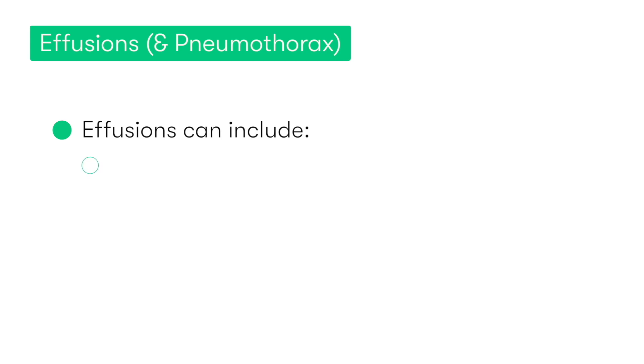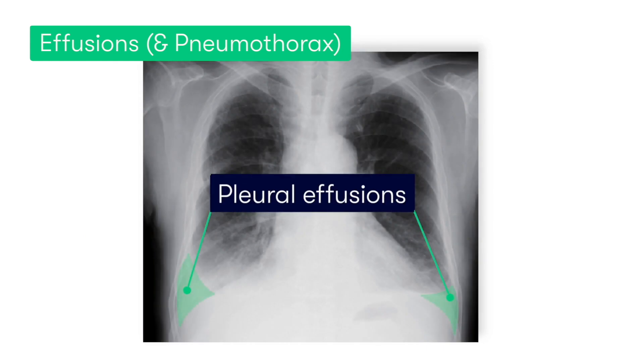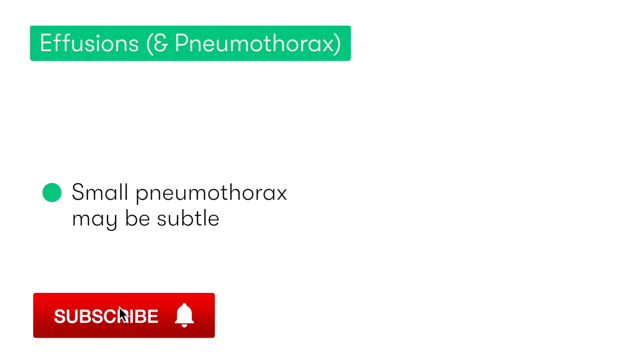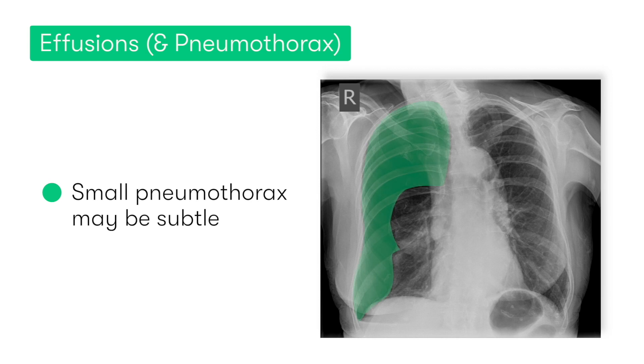We can now move on to E, which refers to effusions. We'll also look at the pleural spaces for the presence of any pneumothorax. Effusions can be a haemothorax, pus, or other exudates or transudates — for example, a chylothorax. In the erect chest x-ray, the fluid typically accumulates around the costophrenic angles, as you can see here. Now looking at pneumothoraces — if they're only small, they may be evident only by a small sliver of air present at the apex of the pleural cavity. However, in large pneumothoraces it's often far more obvious, as you can see here.